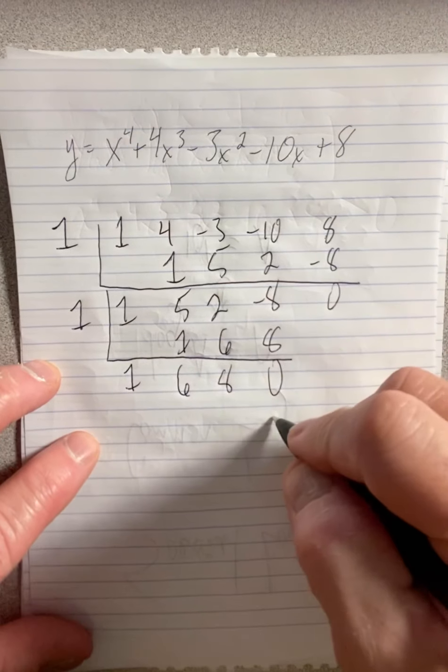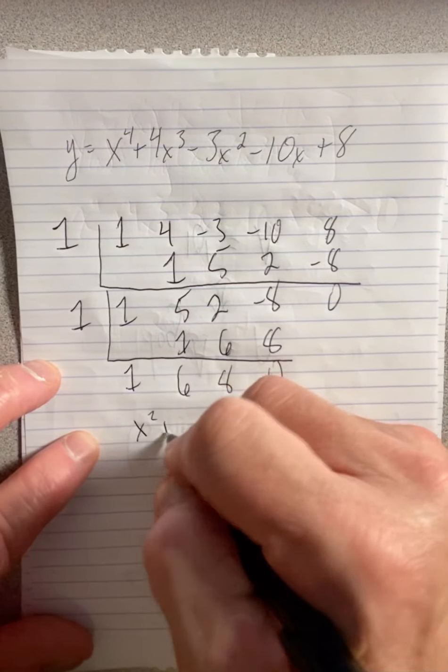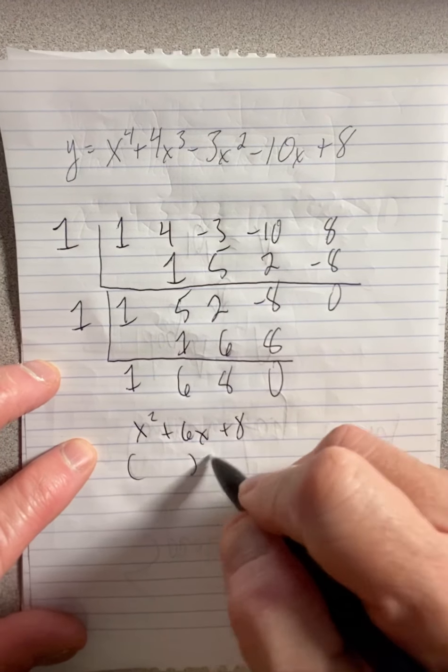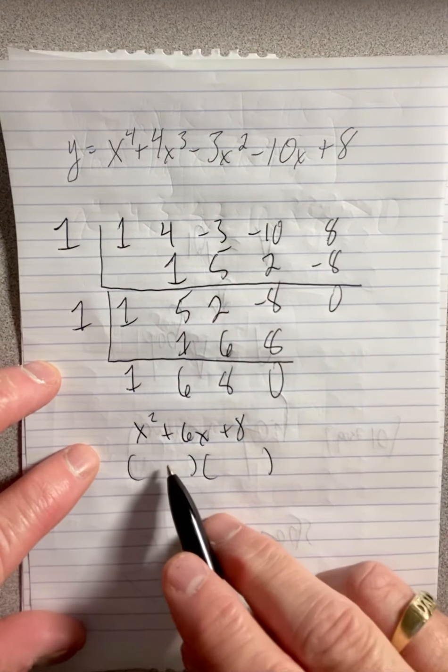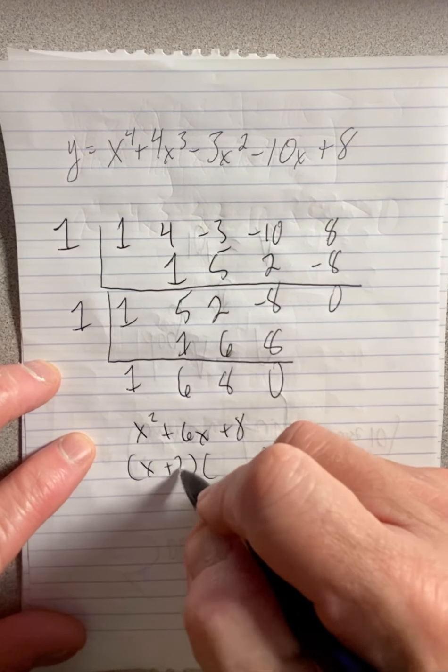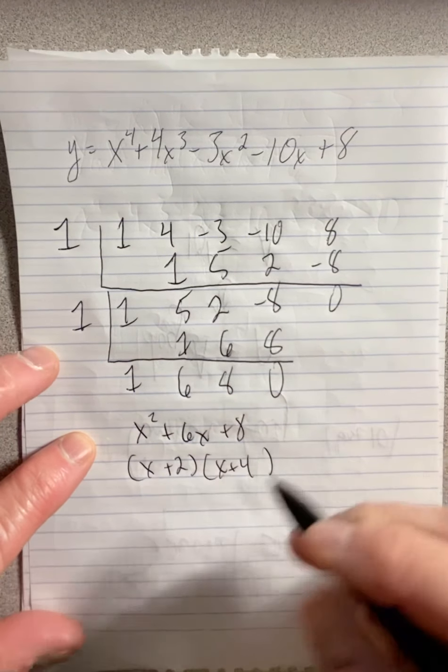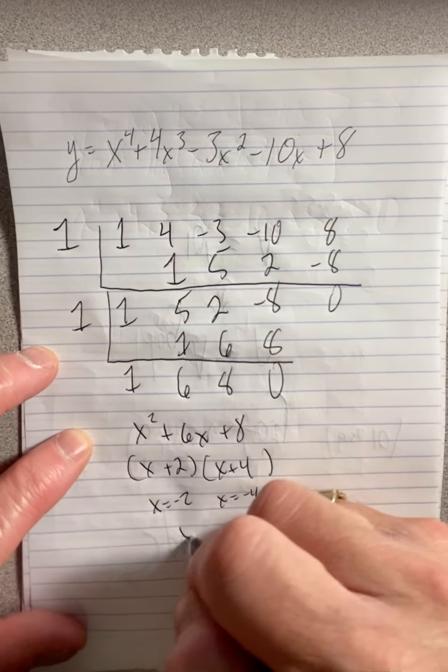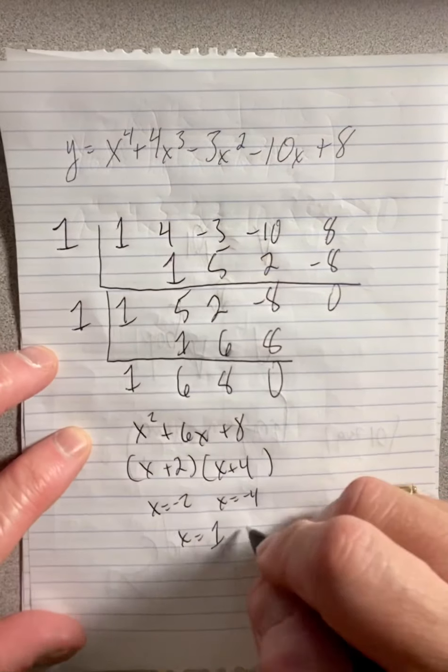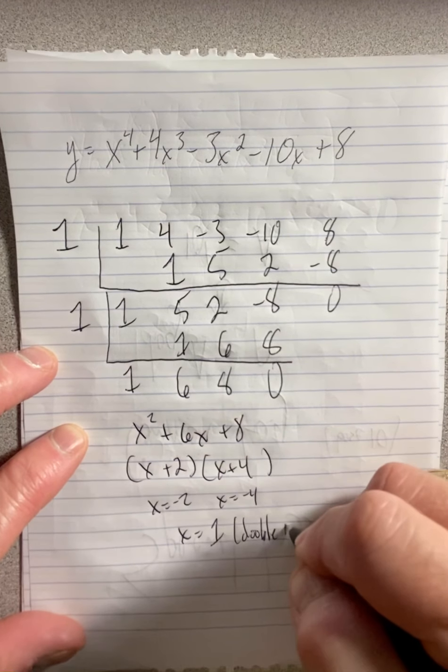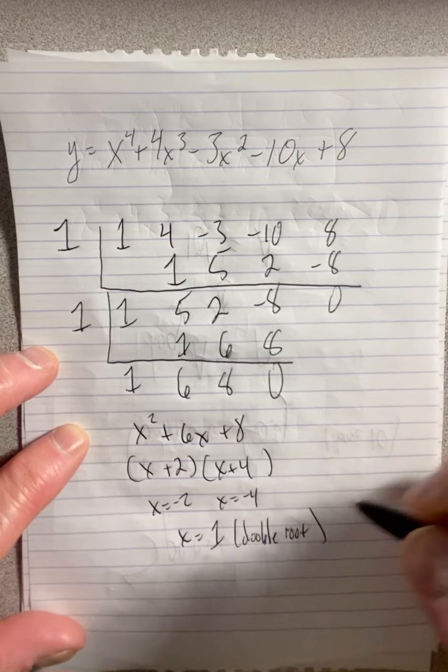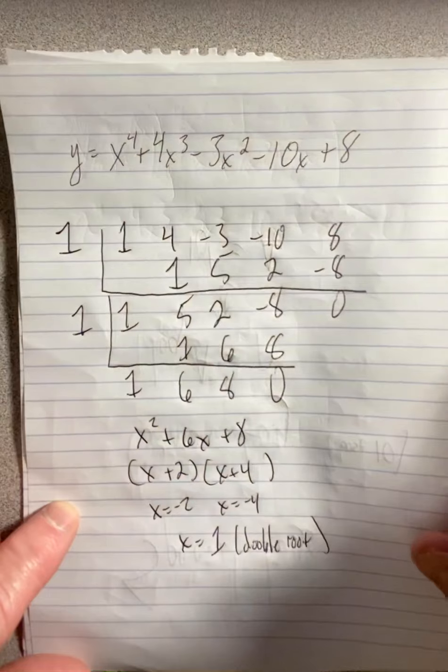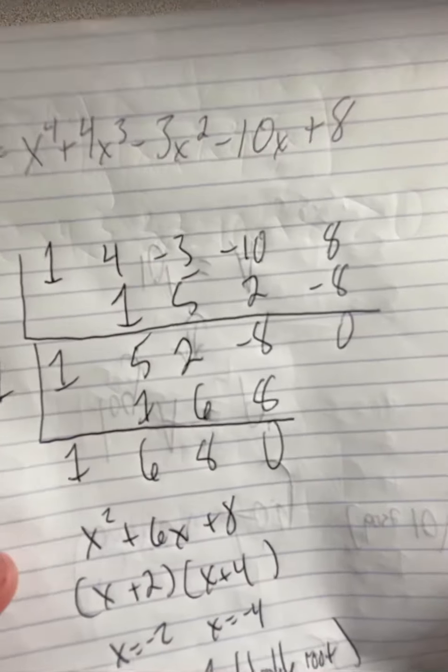This represents x squared plus six x plus eight. So at this point, it might be easier just to factor than to find the other roots. And they are x plus two and x plus four. So the roots are negative two and x equals negative four. But don't forget also that we had x equals one and it worked twice, so it's a double root. Once you have the roots, it's pretty easy to generate a rough sketch of the polynomial. So let's get a rough sketch of the polynomial next.